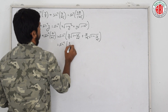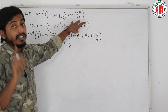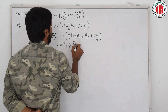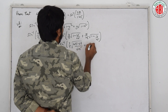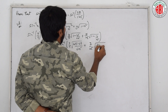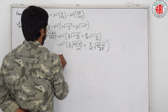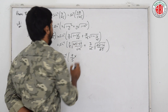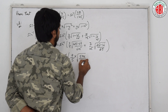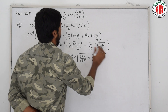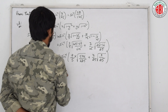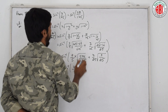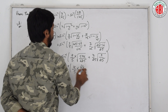Let us simplify. We get sin inverse of 4 by 5 into root of 625 minus 49 — that is 576 divided by 625 — plus 7 by 25 into root of 25 minus 16, which is 9 by 25. Square root of 576 is 24, square root of 625 is 25, square root of 9 is 3, and square root of 25 is 5.